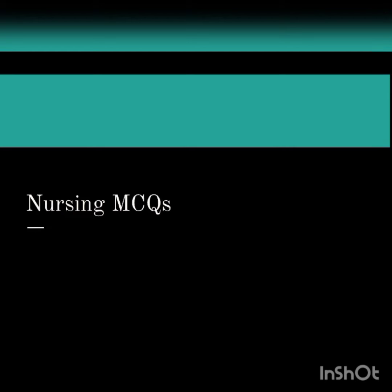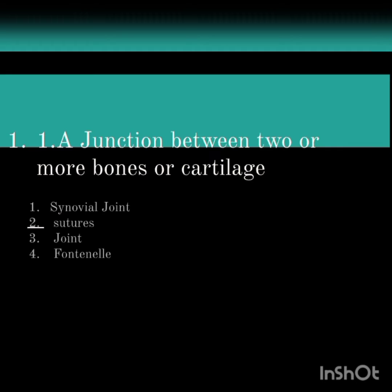Today we will look at some nursing MCQ questions. The first question: a junction between two or more bones or cartilage. The options are synovial joint, sutures, joint, and fontanelle. The answer is joint.